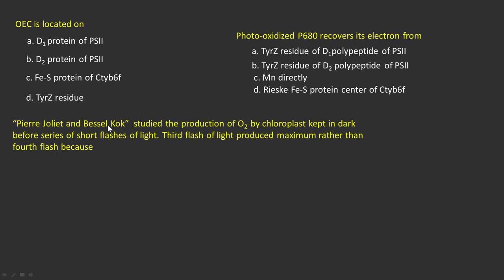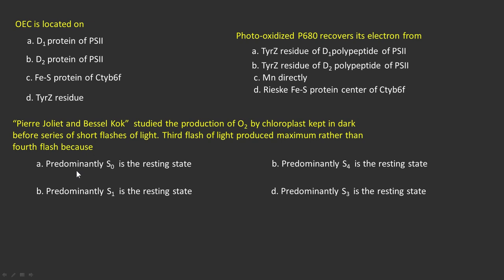The third question: Pierre Joliot and Bessel Kok studied the production of oxygen by chloroplasts kept in dark before series of short flashes of light. Third flash of light produced maximum rather than fourth flash. Options are: predominantly S0 is the resting state, predominantly S4 is the resting state, predominantly S1 is the resting state, and predominantly S3 is the resting state.